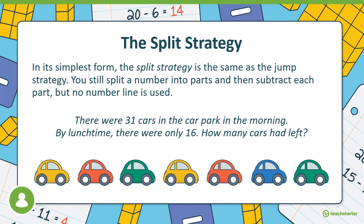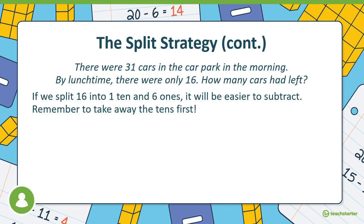There were 31 cars in the car park in the morning. By lunchtime there were only 16. How many cars were left? Let's circle our numbers, underline our question, and box our keywords. We're splitting our numbers into tens and ones. You can also do this using hands-on tools — there are practical ones at the end you can get online, or you can use toys at home and split them into tens and ones.